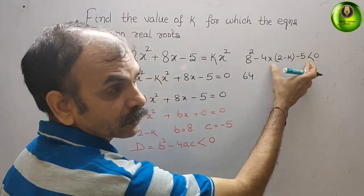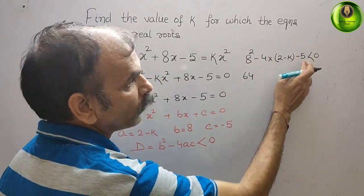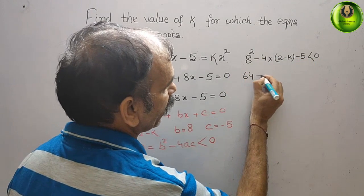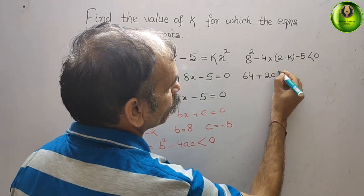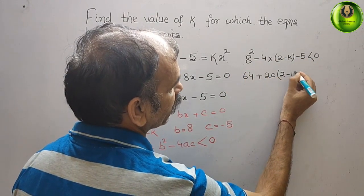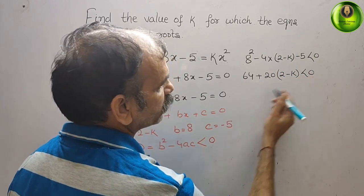Now solve this. 8 square is what? 64. Now minus into minus is plus, 4 into 5 is 20, so we will write plus 20 into 2 minus k is less than 0.